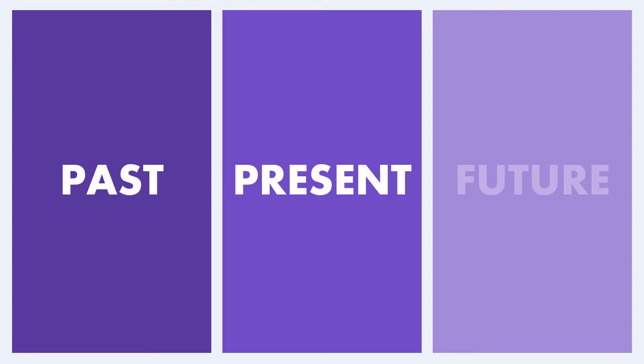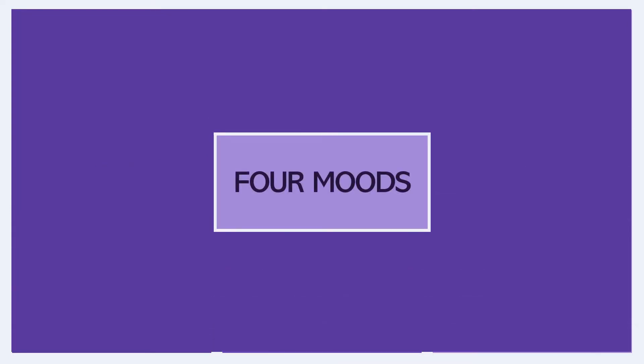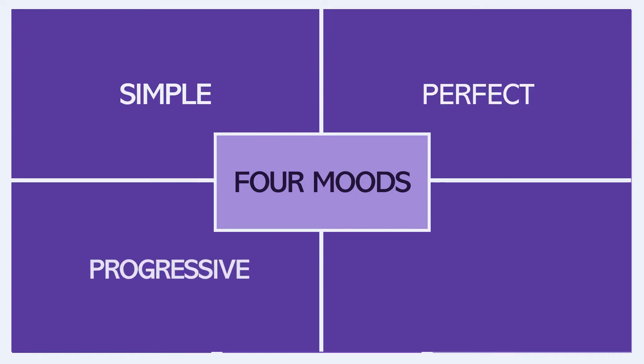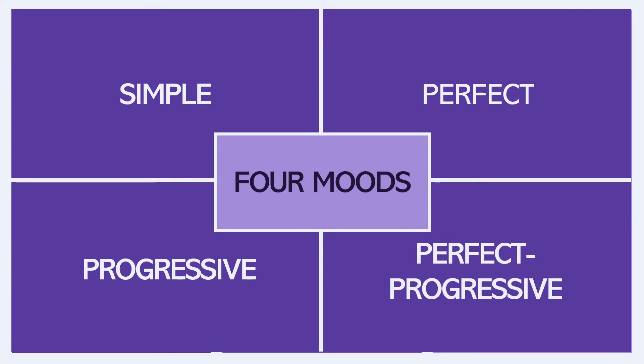When using the three tenses — past, present, and future — it's necessary to frame them within one of four moods to add grammatical context: the simple mood, the perfect mood, the progressive mood (also known as the continuous mood), and the perfect progressive mood.